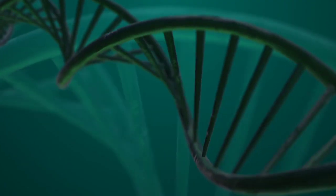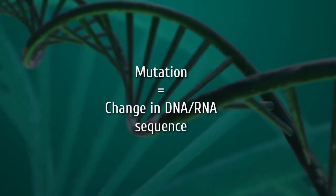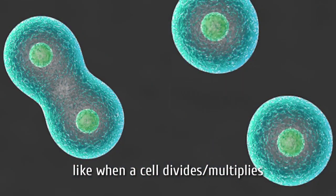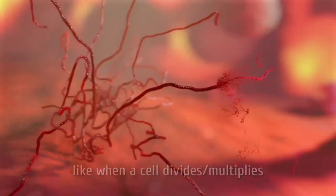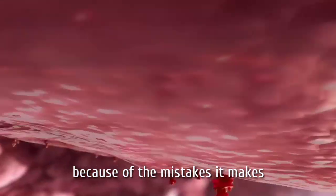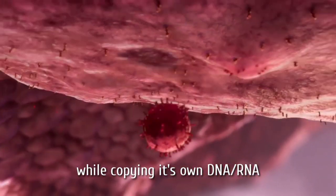A mutation is a change that occurs in the DNA or RNA sequence. A mutation can occur because of many reasons, like when a cell divides or multiplies. When a virus multiplies, it mutates because of the mistakes it makes while copying its own DNA or RNA.